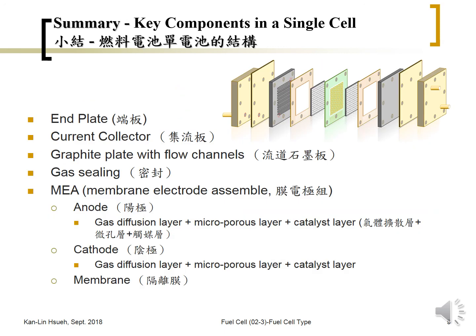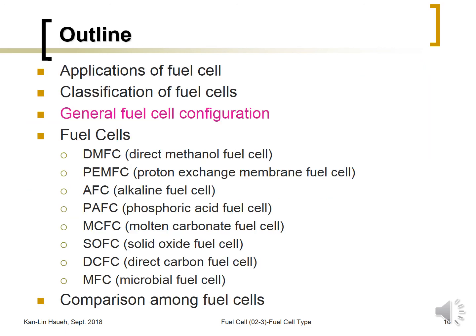In summary, the peripheral components of a single cell are listed here. The core element is the MEA — the membrane electrode assembly. For the anode and cathode it is composed of the gas diffusion layer, microporous layer, and catalyst layer. The membrane provides ionic transport but is electronically insulating. So far we've talked about the catalyst, the electrode, the MEA, and the single cell. But a single cell only outputs about 0.7 volts, which is very low for practical applications. So we need to connect all single cells in series to make a cell stack, which will give a reasonable output voltage. The next section will talk about the cell stack.